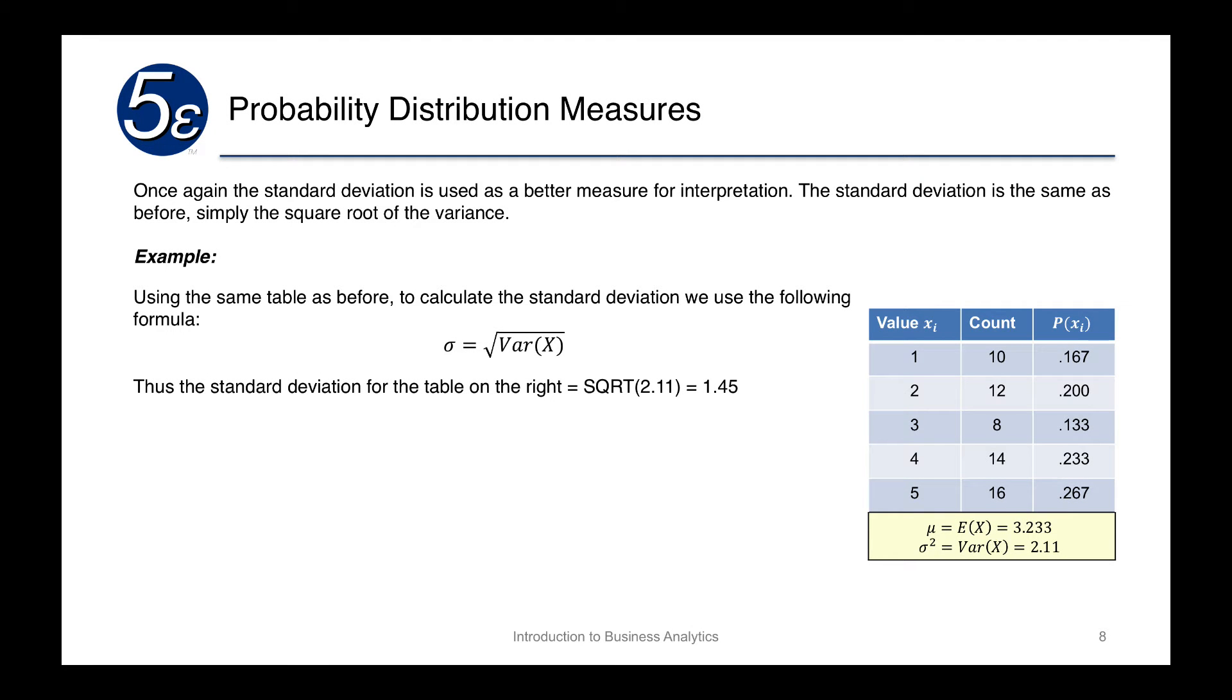Now the standard deviation is used again as a better measure for interpretation than the variance, and it's the same as it was in previous slides. It's simply the square root of the variance. So all we simply need to do is take the square root of the variance calculated on the previous page, which was 2.11, take the square root, and we get 1.45 to understand the standard deviation.